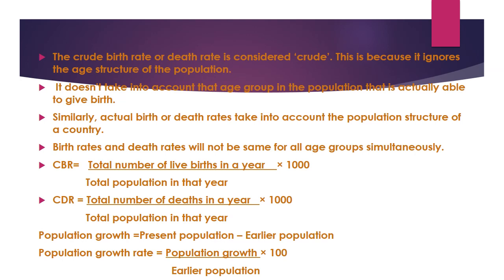Similarly, the crude death rate (CDR) formula is: total number of deaths in a year divided by total population in that year, multiplied by 1000. For example, if deaths in India in 2020 total 50 and the population is 10,000, then CDR = 50 ÷ 10,000 × 1000. Population growth equals present population minus earlier population. Population growth rate equals population growth divided by earlier population, multiplied by 100.